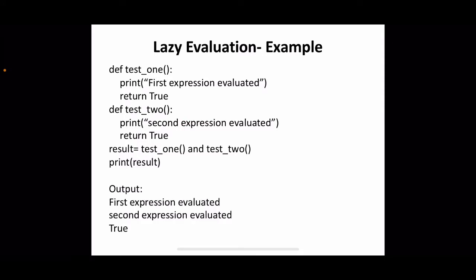The first function is executed first, the return value is true and that will be substituted. But it cannot confirm that the result is true because only if both of the operands are true is the result true. So it should go for the second one also. This will be executed, then true will be substituted, then true AND true — the result is true.